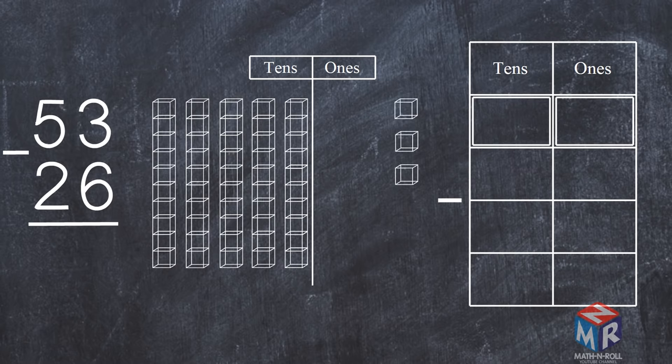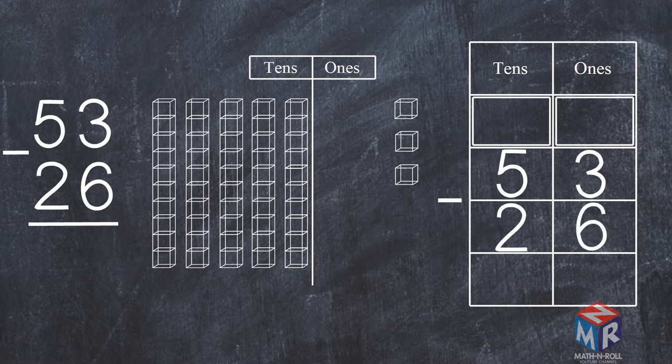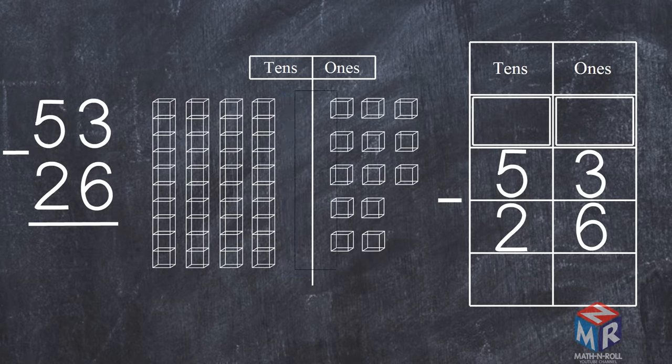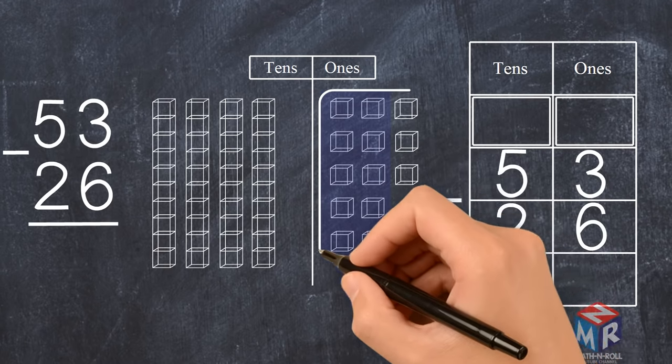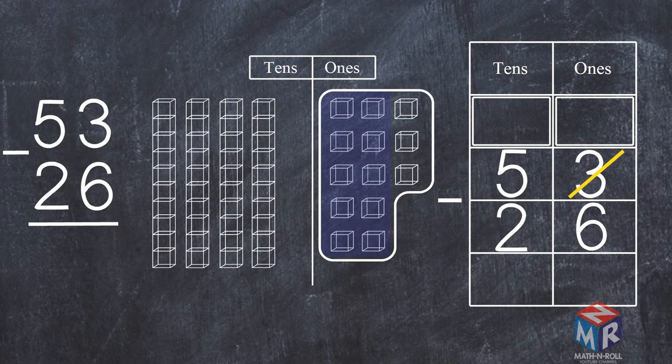We cannot subtract 6 from 3, so we need to regroup one 10 into 10 ones. Now we have 13 ones. We cross out the 3 and write 13 as the new ones.